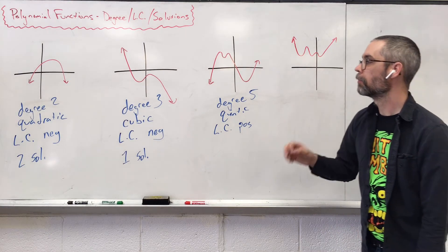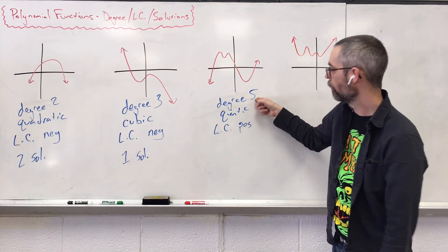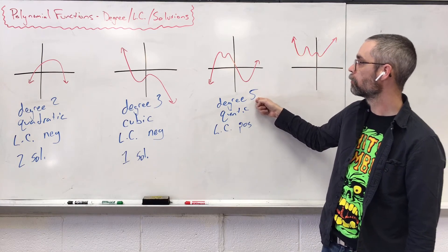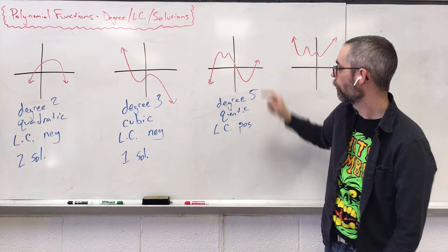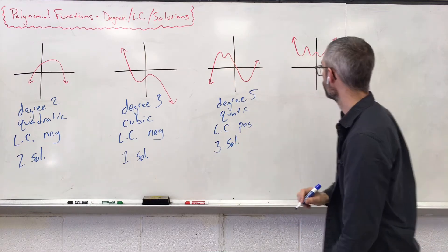I want to know number of solutions. Number of solutions could be the maximum amount of what the degree is, how many times you cross. But in this case, we only cross one, two, three times. So three solutions.